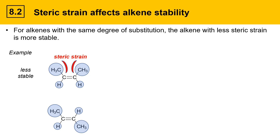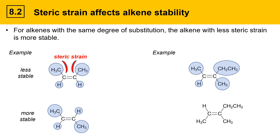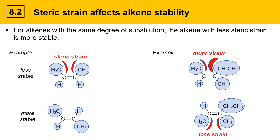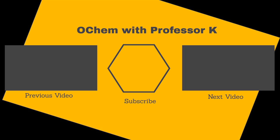Considering a trisubstituted alkene example: one stereoisomer has steric strain developing between a methyl group and a larger ethyl group, while the other stereoisomer has steric strain between two methyl groups. The methyl-ethyl interaction is a bigger steric strain than the methyl-methyl interaction, so there is more strain in the first structure and less strain in the second. This makes the first structure less stable and the second more stable. With this logic you can sort out which alkenes are more or less stable even when they have the same degree of substitution.